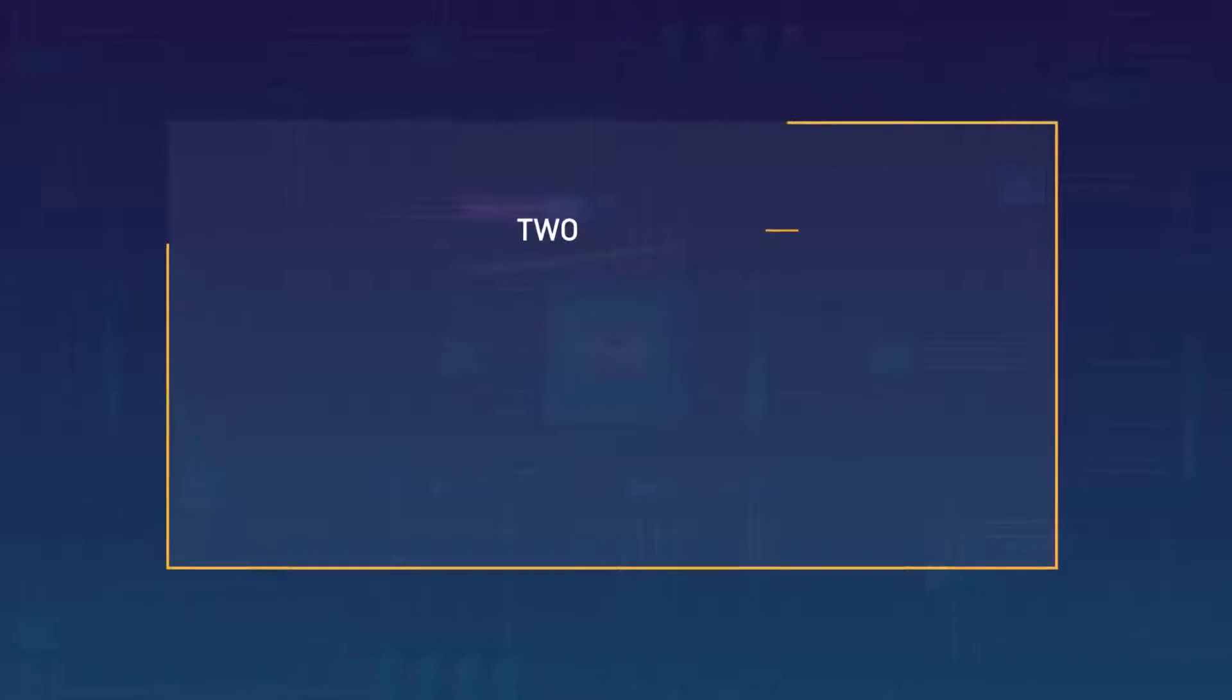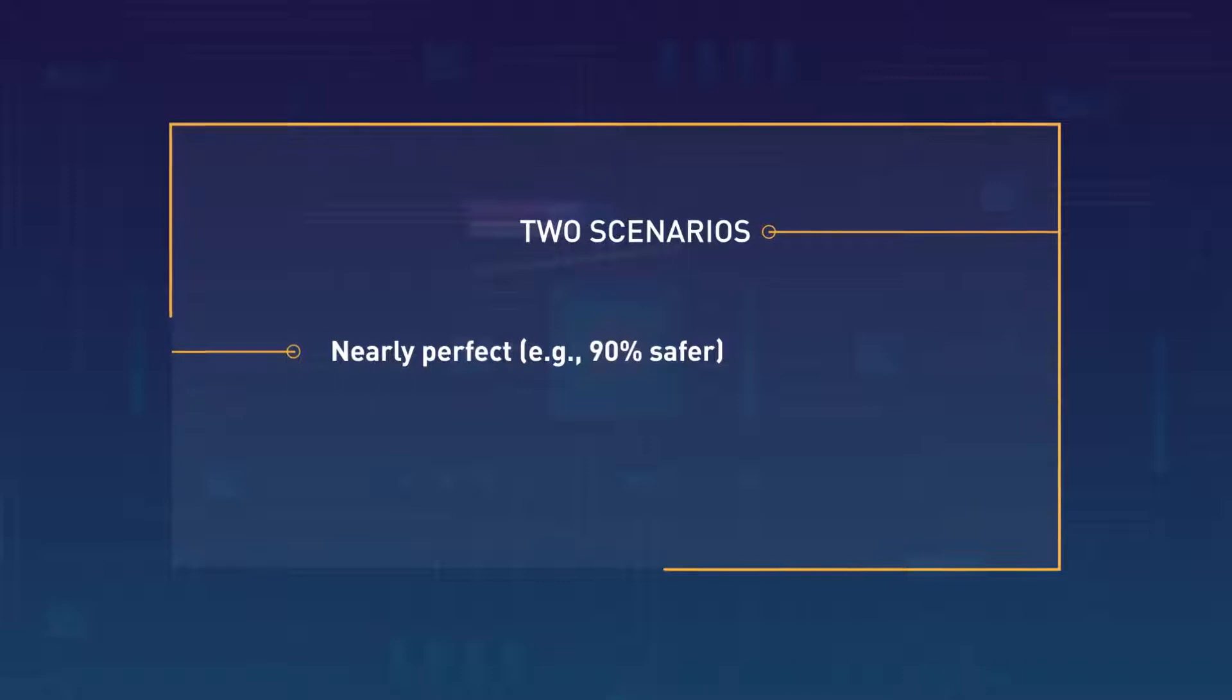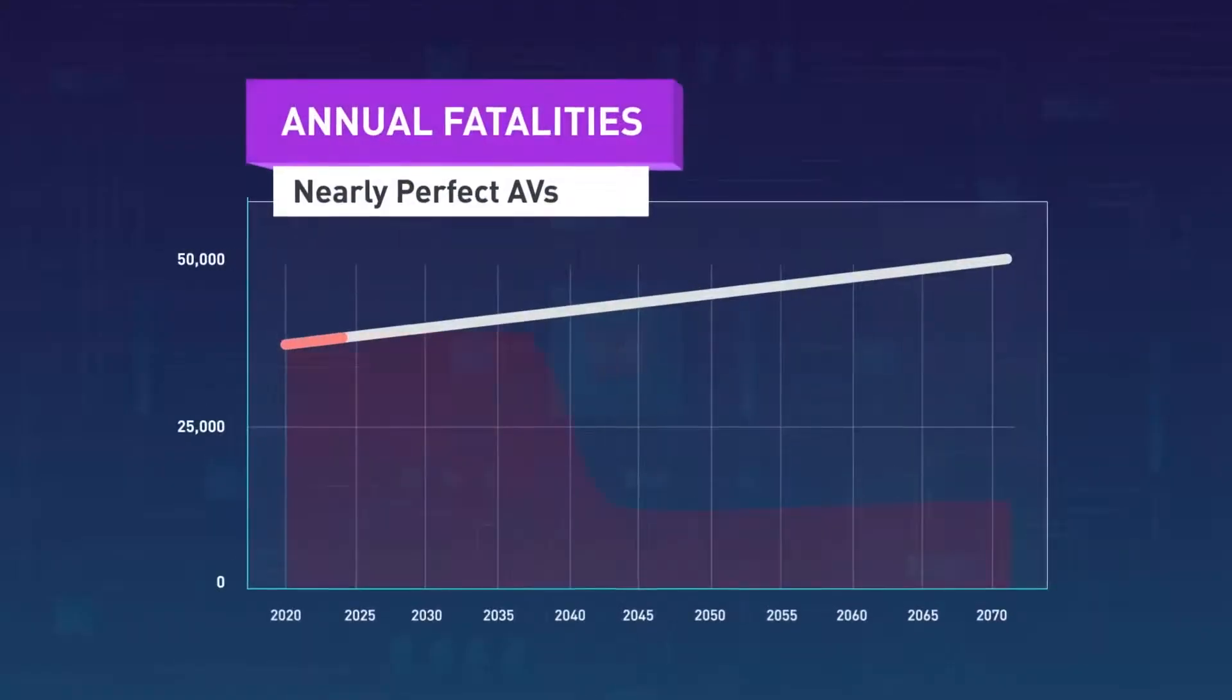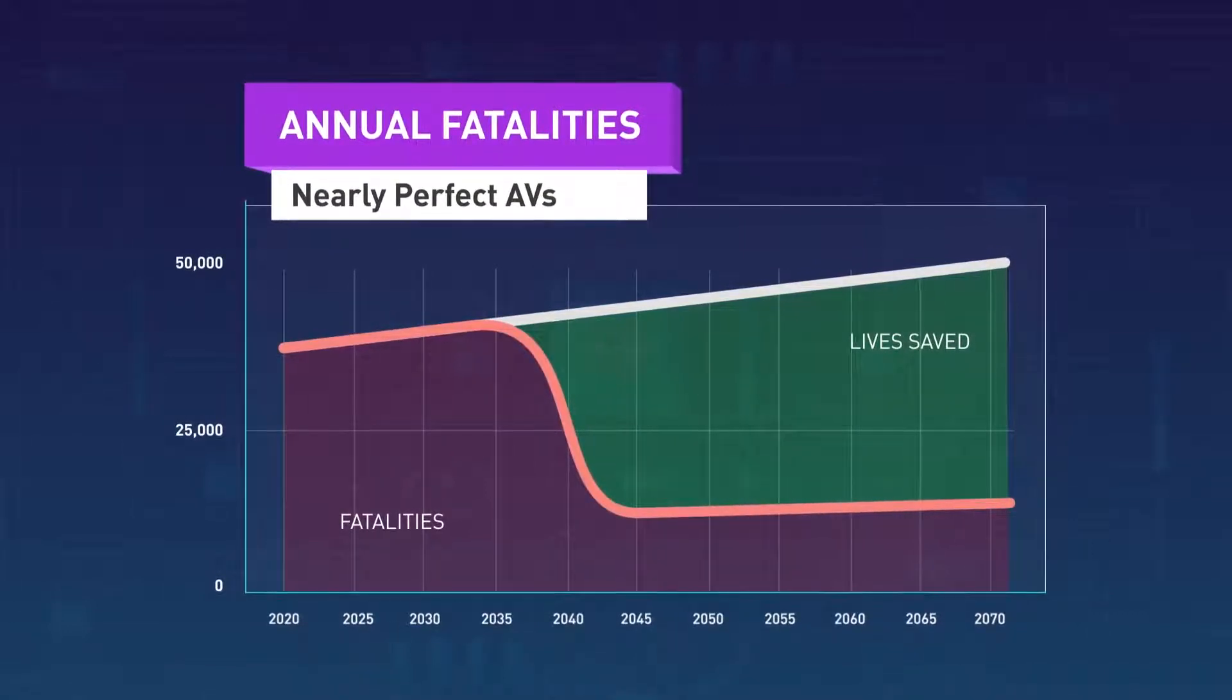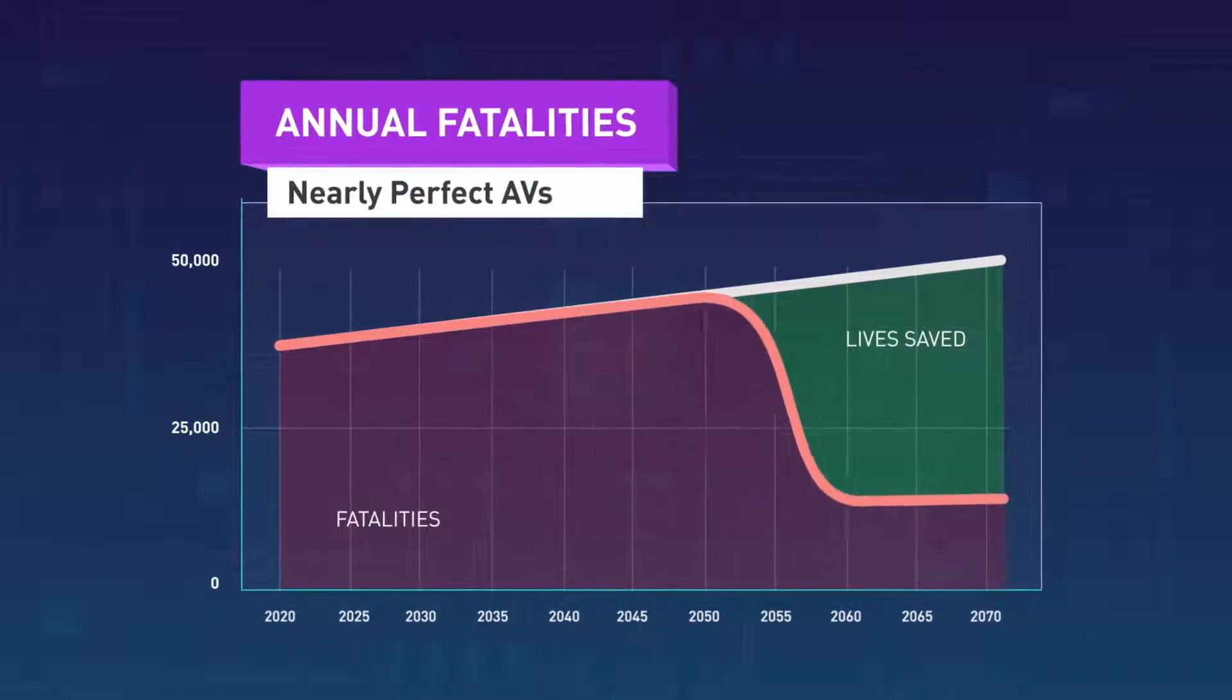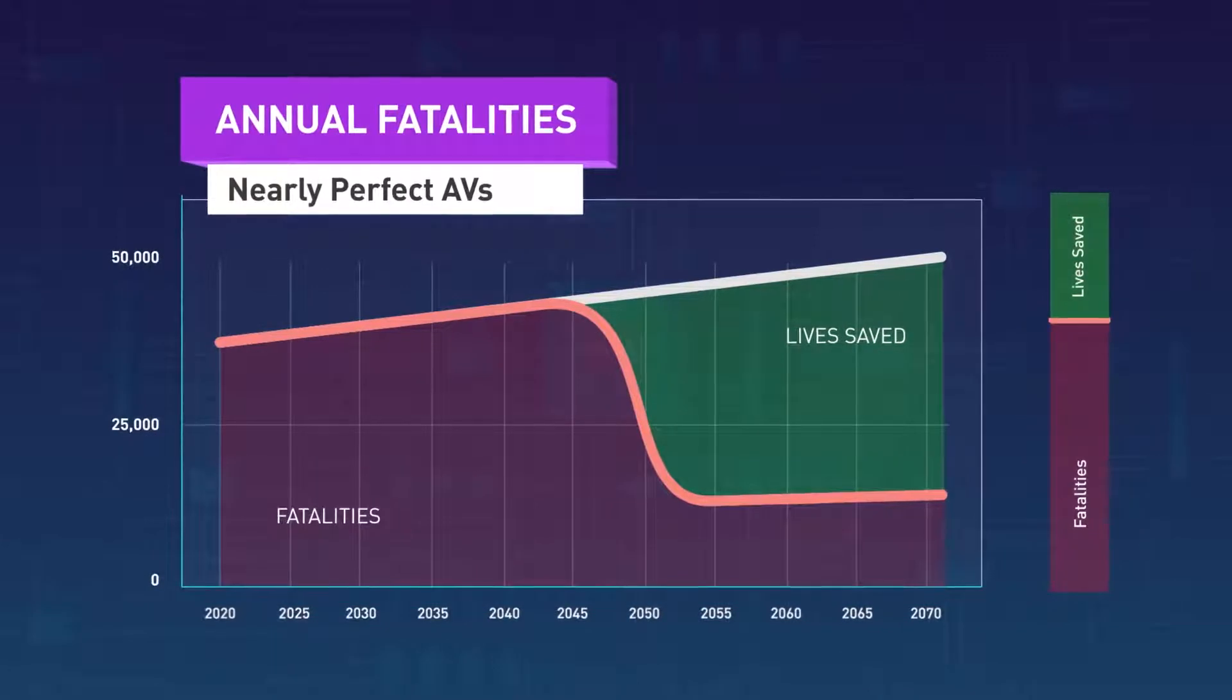Now we can estimate the lives saved under two scenarios: nearly perfect AVs, and ones that are just better than the average driver. If nearly perfect AVs prevent 29,000 of 30,000 annual deaths, it's a no-brainer to put them on the road. But when does that happen? How long have you waited for them to be perfected? And how many people have died in the meantime?